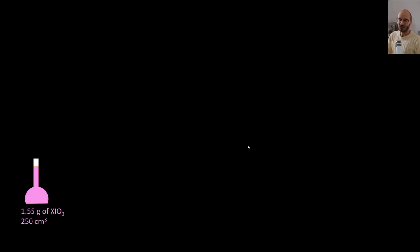So we have an iodate salt of a Group 1 metal. You may think, well, what is that? That is something like maybe sodium iodate, potassium iodate, or rubidium iodate. For that reason, I just call it XIO₃. X could be any metal from Group 1. You take 25 cm³ and put it into a conical flask.